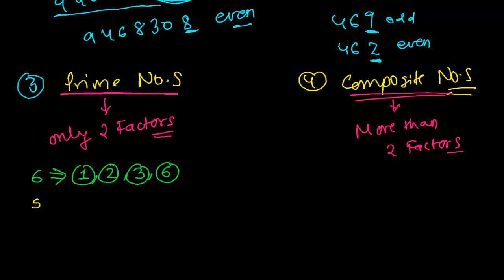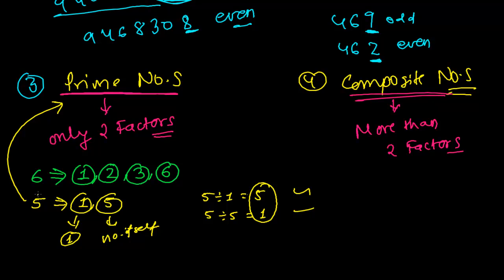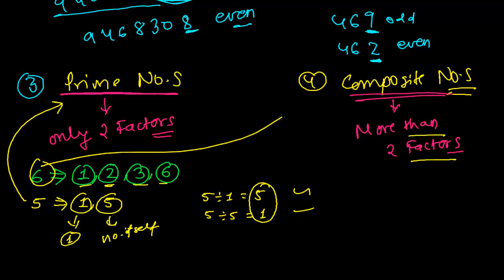Now suppose you have 5. What are the factors of 5 — those numbers which divide 5 exactly? 5 is divided exactly by 1, and 5 is divided exactly by 5 itself. If you divide 5 by 1, you get 5; if you divide 5 by 5, you get 1. Only these 2 possibilities exist, so 5 has just 2 factors. Those numbers which have only 2 factors are called prime. So 5 is a prime number, but 6 has 4 factors and therefore 6 is a composite number.